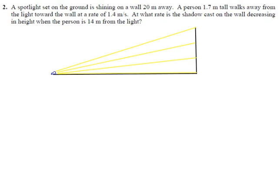Okay, a spotlight is set on the ground shining on a wall. This is not all that different from the famous street lamp problem, except for the positions, but it's still going to be a similar triangles thing, and the solution is not going to be all that different, I don't think.